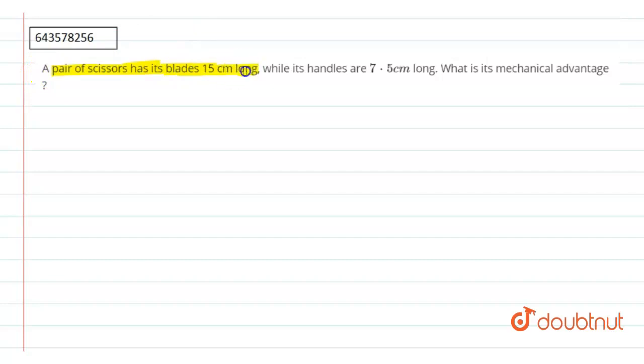Hello, so our question is: a pair of scissors has blades 15 centimeter long while its handles are 7.5 centimeter long. What is the mechanical advantage?